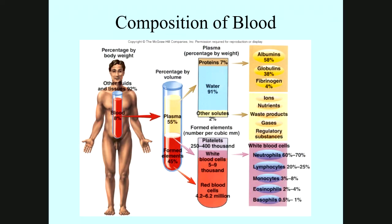There are two major constituent compositions of the blood. Fifty-five percent is plasma and the rest, forty-five percent, are formed elements. Fifty-five percent of the plasma is made up in large part of water — ninety to ninety-one percent. Seven percent are proteins such as albumins, globulins, and fibrinogen, and two percent are other solids like iron, nutrients, gases, and some regulatory substances.